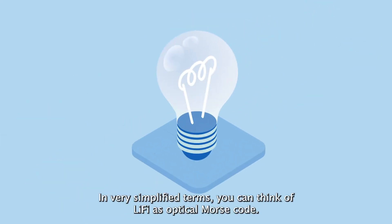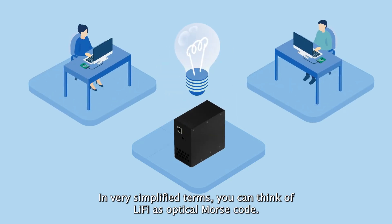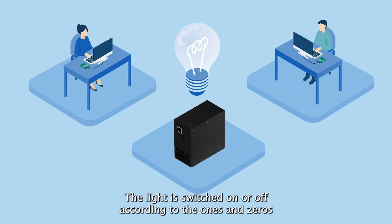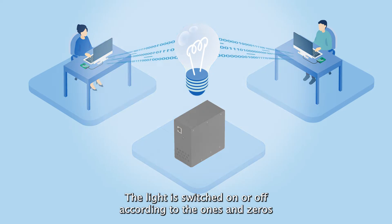In very simplified terms, you can think of Li-Fi as optical Morse code. The light is switched on or off according to the ones and zeros in the data.